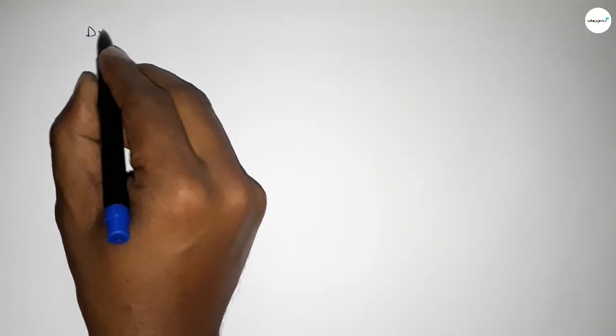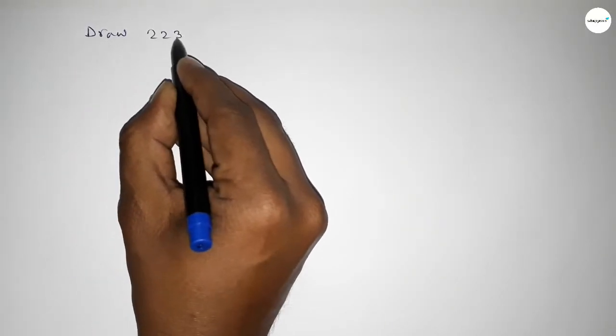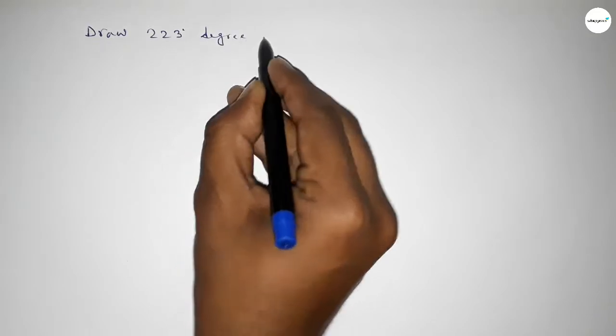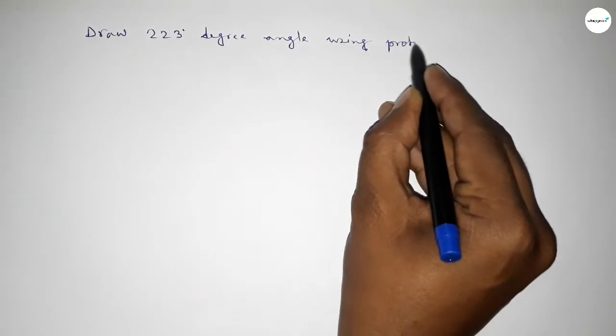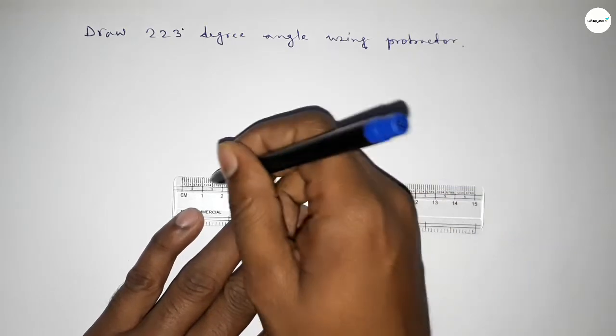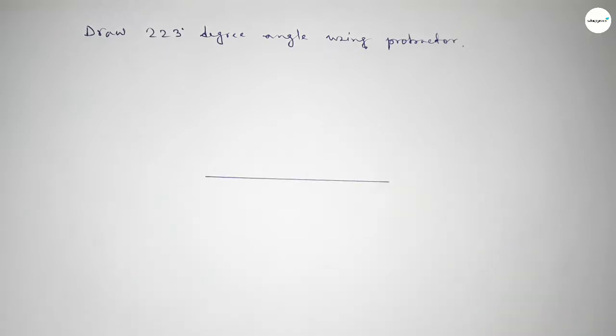Hi everyone, welcome to Size Share Classes. Today in this video we have to draw a 223-degree angle using a protractor. So let's start the video. First of all, we have to draw here a straight line of any length.